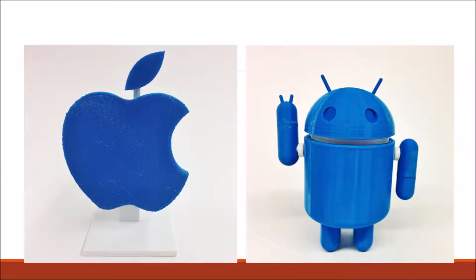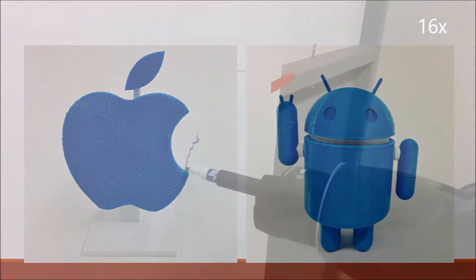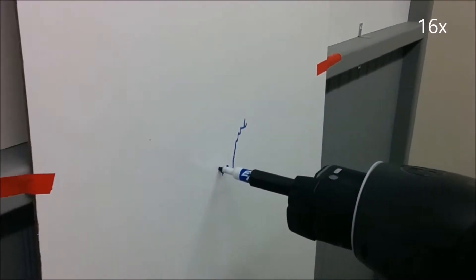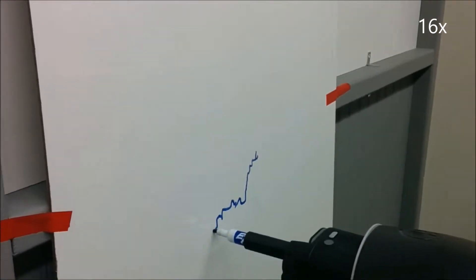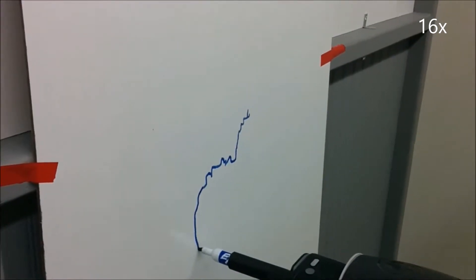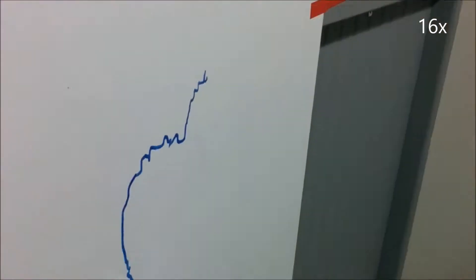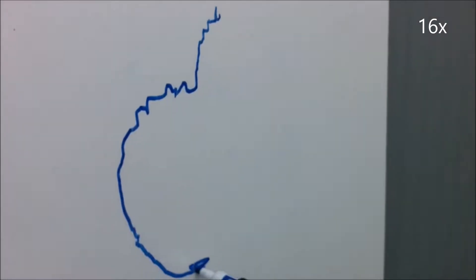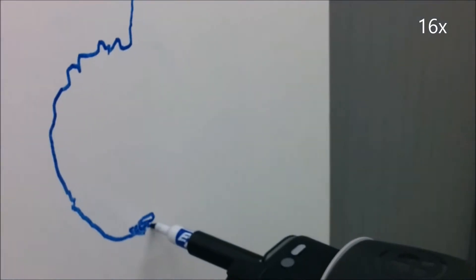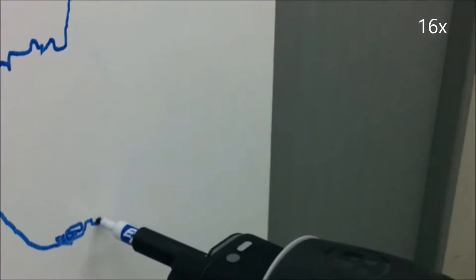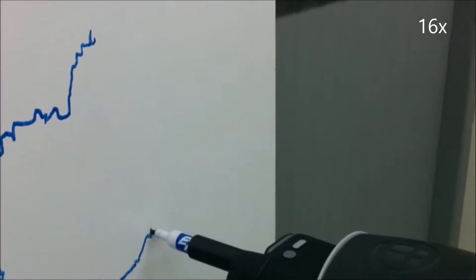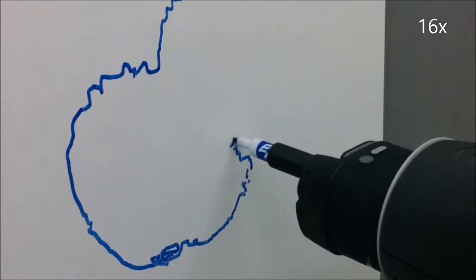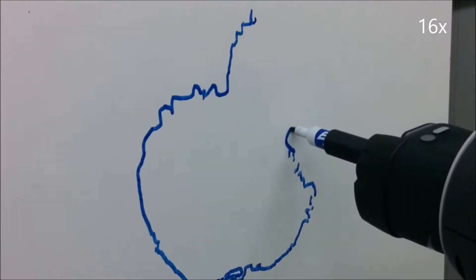These are the two images that we had Baxter draw. This is Baxter drawing the single-contour apple after looking at it. The video has been sped up by 16x. The circular squiggles occur when the end effector overshoots and Baxter tries to zero in on the missed target point by iteration.